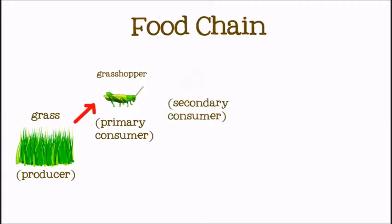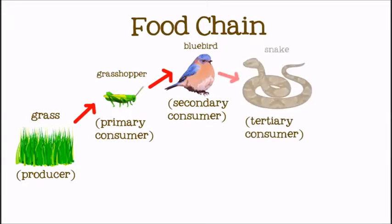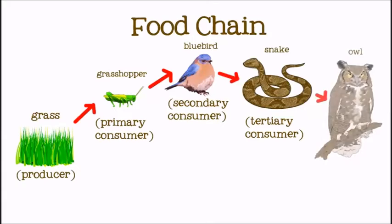You can see this food chain in the running video. Grass is eaten by grasshopper. Grasshopper is eaten by bird. Snake eats bird. Owl eats snake.